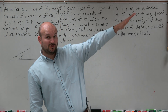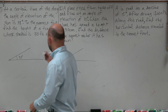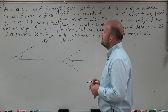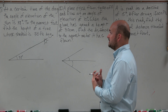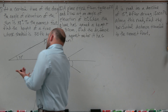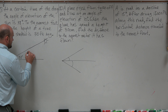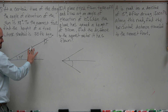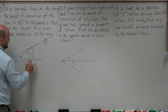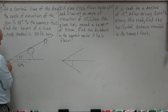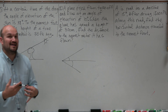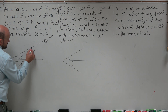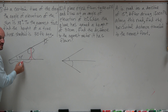Think of the horizontal line as the ground — the sun is up here at an angle of elevation of 38 degrees. The tree is creating a shadow; the sun is blocked by the tree, creating a shadow 30 feet long. We need to figure out where exactly our right triangle is, and we can determine it runs from the base of the shadow all the way up to the sun's ray.